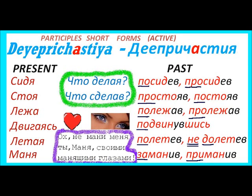It only accompanies the other action. This Деепричастие present tense — сидя, for example. He was reading sitting — он читал сидя на стуле или в кресле — he was reading sitting in the armchair or on the chair. The next one is стоя — standing. For example, he was singing standing.